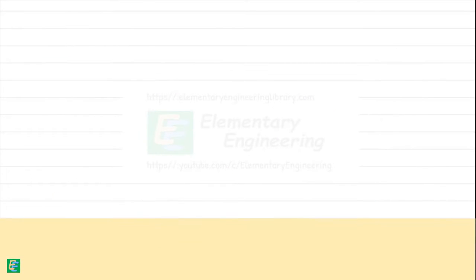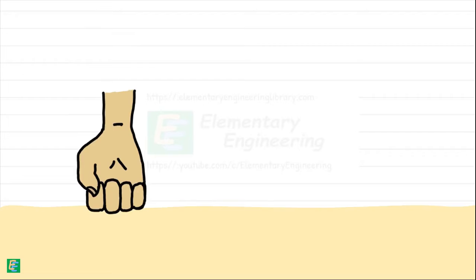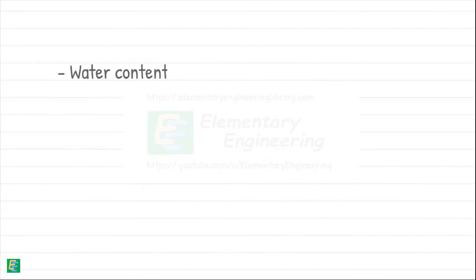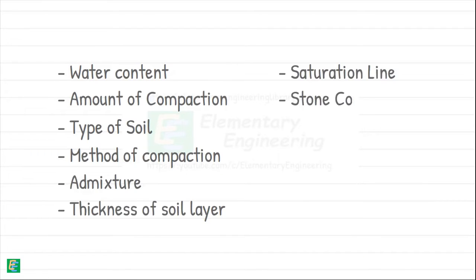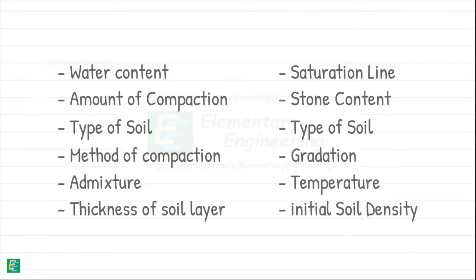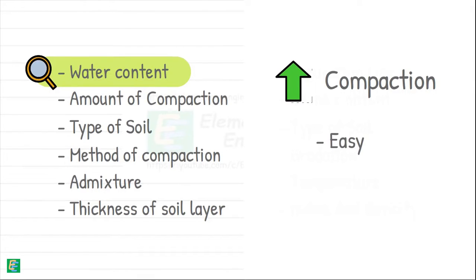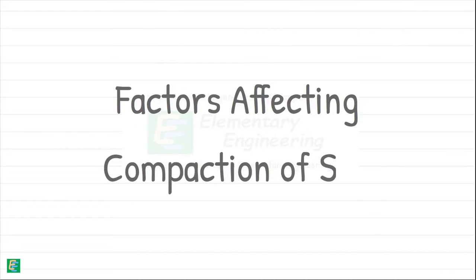Our aim is to compact the soil as much as possible using easier and cost-effective methods. There are several factors that influence soil compaction. By identifying and managing these factors, we can maximize compaction levels with ease, ensuring a more effective and cost-efficient approach to our goal. Let's discuss some of these factors affecting soil compaction.